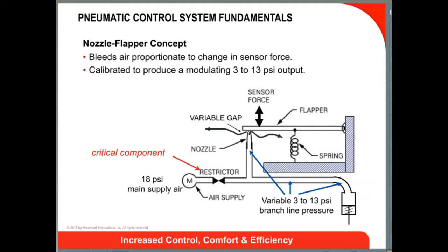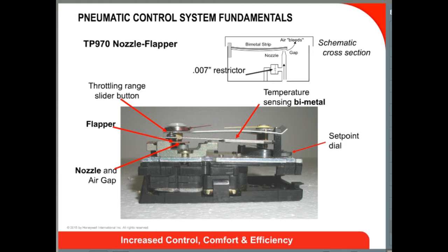This cross section of a TP970 thermostat shows the nozzle flapper assembly. By adjusting the flapper between the bimetal and the nozzle, we can adjust the influence the bimetal has on the bleed rate at the gap, thus adjusting the throttling range of the thermostat. We'll discuss more about the throttling range adjustment in our video covering thermostat calibration.